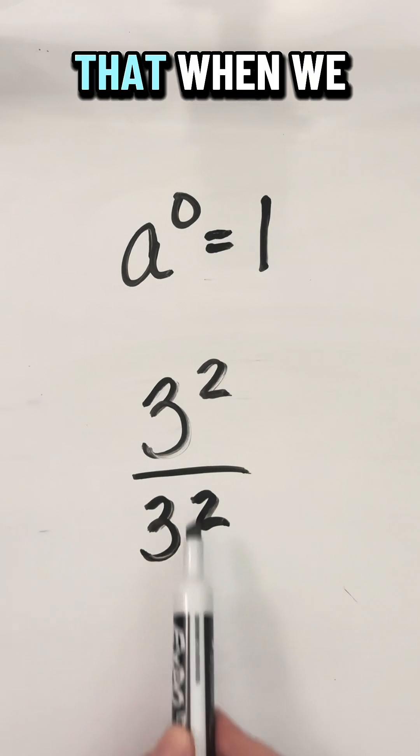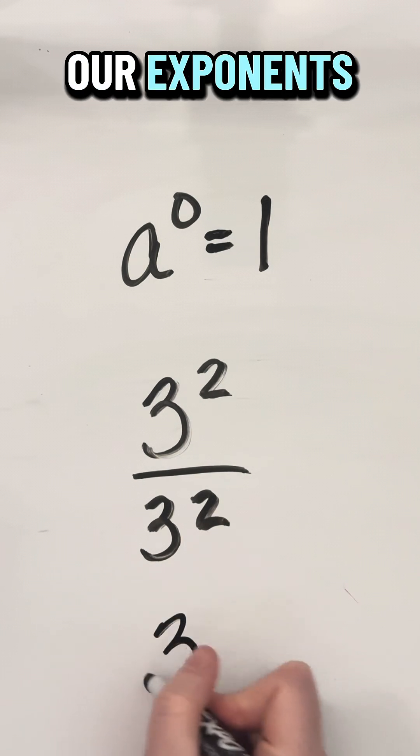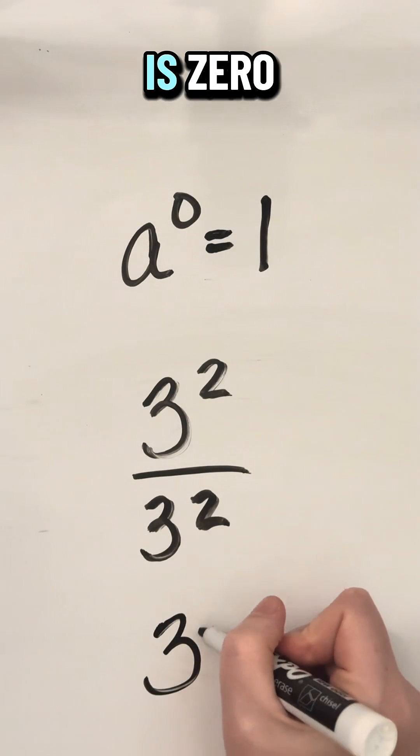Now, we know that when we are dividing powers with the same base, we keep the base of three and we subtract our exponents. Two minus two is zero.